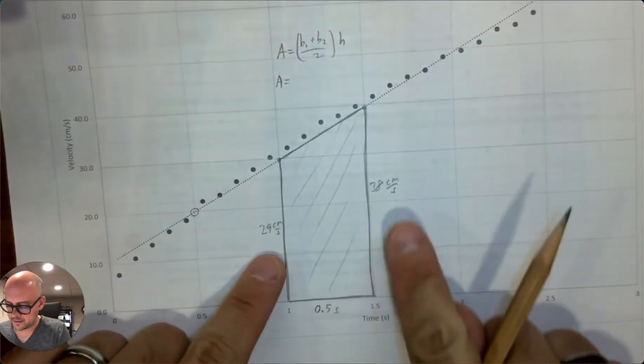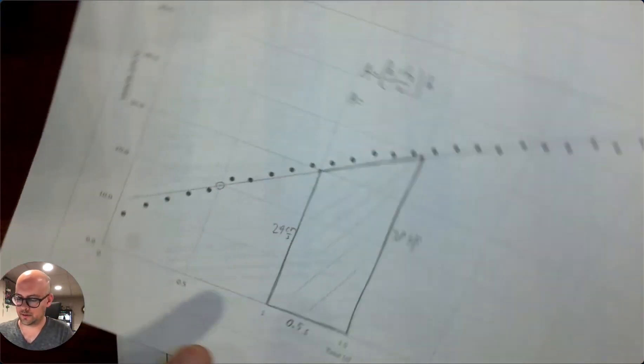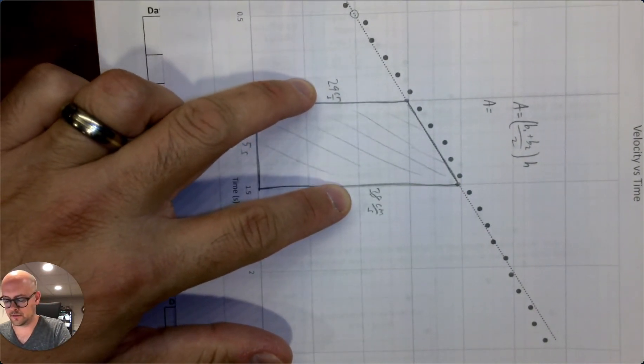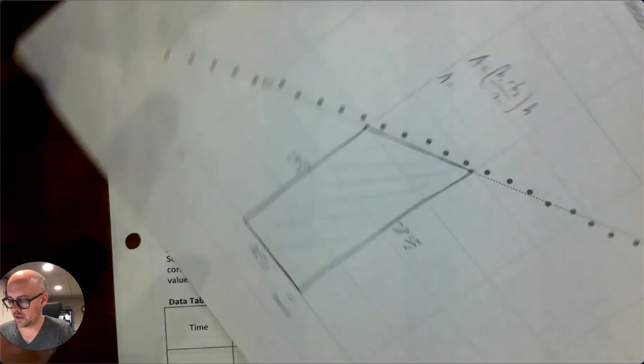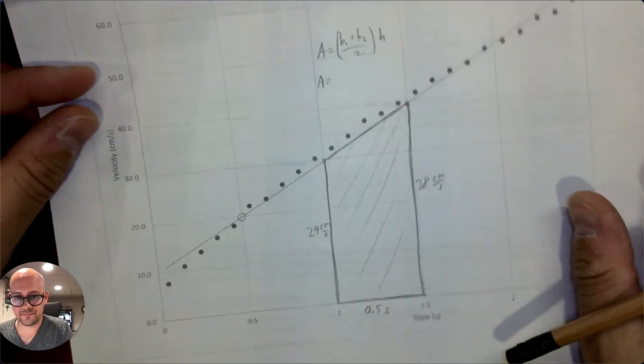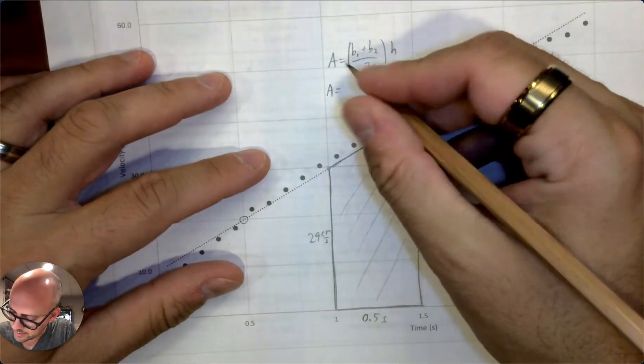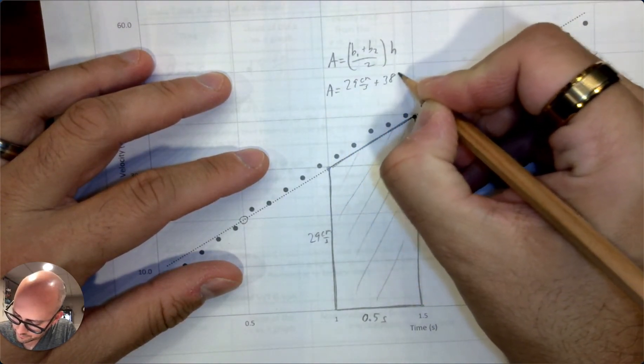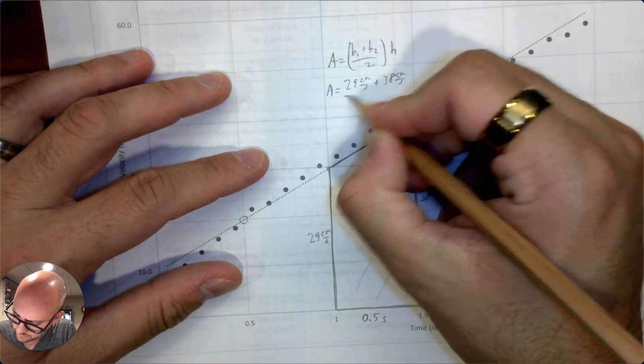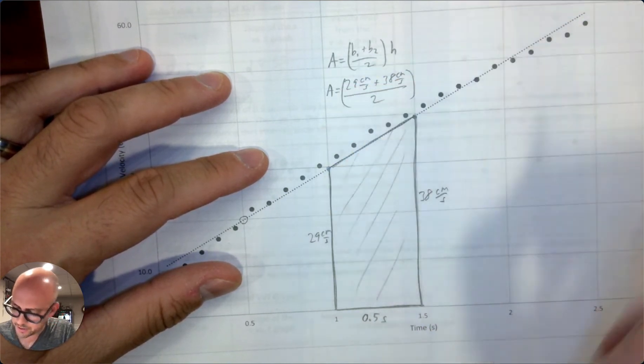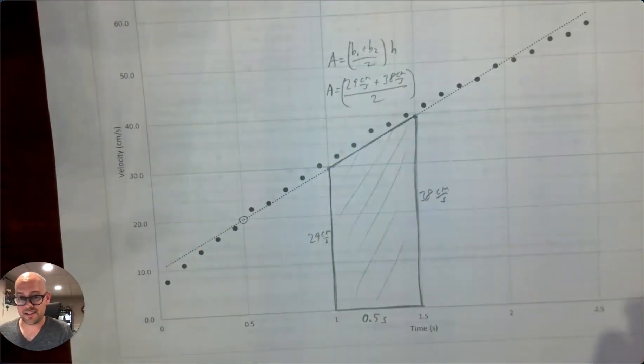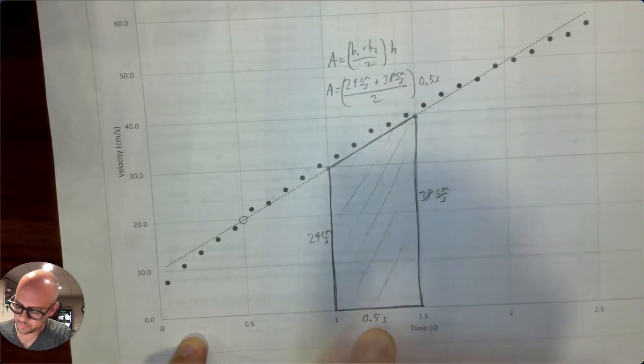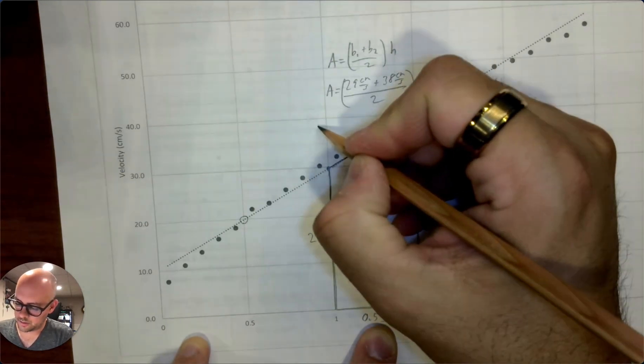So okay, the bases are here, because if I like tilt this, like a trapezoid has bases that are two different lengths. If the bases are the same length, then you have a rectangle. And so the two bases are 29 and 38. Divide that by two. And then the height of the trapezoid is down here, where the time is. And that's 0.5 seconds. So I'm running out of space. So calculate.